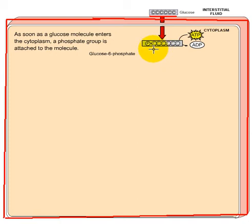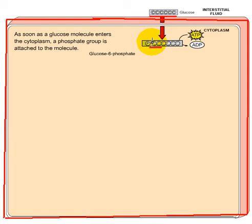One of the first things that happens once glucose diffuses inside the cell is that a phosphate is attached to carbon number 6. Looking at the molecule, carbons are numbered 1 through 6, and a phosphate is attached to carbon number 6.